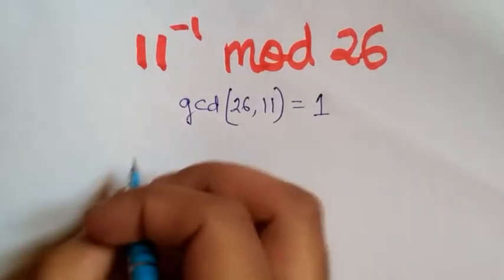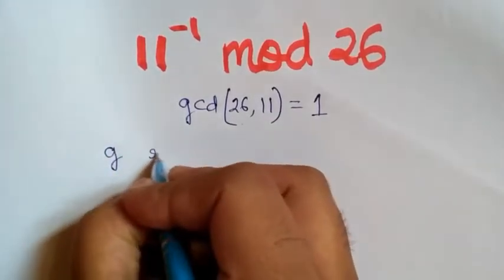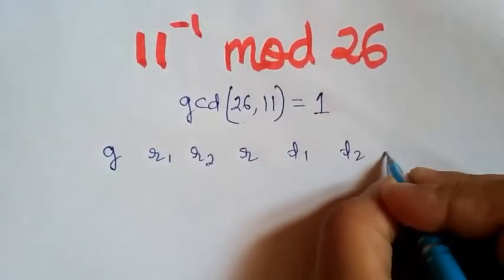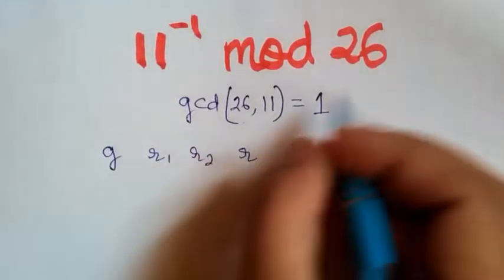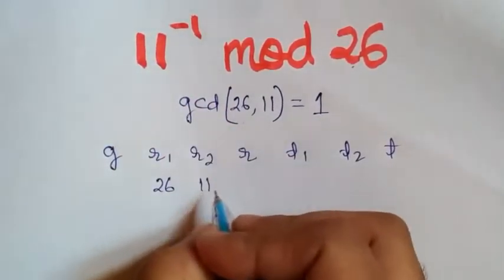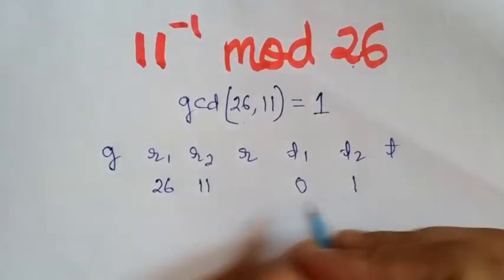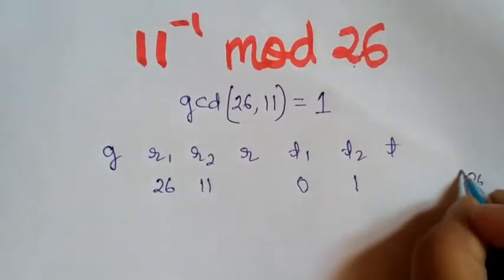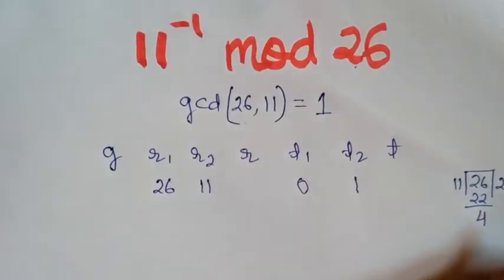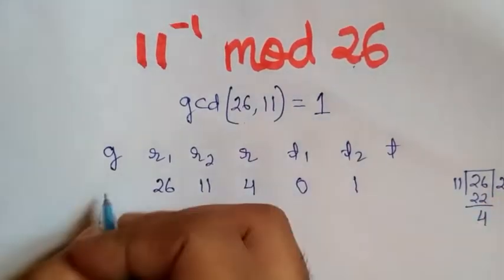We make a table with columns G, R1, R2, R, T1, T2, and T. R1 is 26 and R2 is 11. T1 will by default be 0 and T2 will be 1. When we divide 26 by 11, we get quotient 2 with remainder 4.